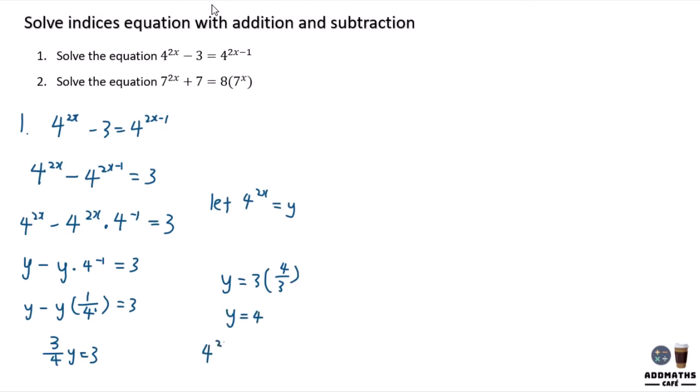4^(2x) = 4^1. Since the bases are the same, you can compare the powers. So 2x = 1, which gives x = 1/2.